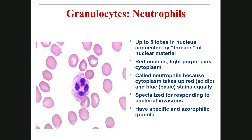The first granulocyte I want to talk about is the neutrophil. The granules of the neutrophil are very small and evenly distributed, and the color is pale purple. Because the granules don't strongly attract either acidic dye or basic dye, we call them neutrophils — 'neutro' means neutral, and 'phil' means loving. The nucleus has more than two lobes — up to five lobes — connected by very thin strands of nuclear material. When the cell ages, the number of nuclear lobes increases, so older neutrophils have several differently shaped nuclear lobes, and we call them polymorphonuclear leukocytes.